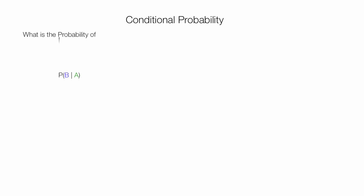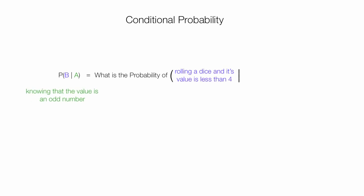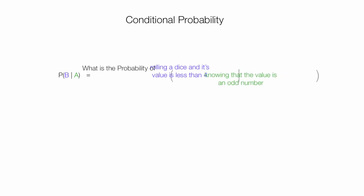The P is: what is the probability? That's the P. And in this example, rolling a dice and its value is less than 4 is event B. Knowing that the value is an odd number is event A. What is the probability of rolling a dice and its value is less than 4, knowing that the value is an odd number? But that would be really cumbersome, and that's why statisticians use the shorthand notation that they do.